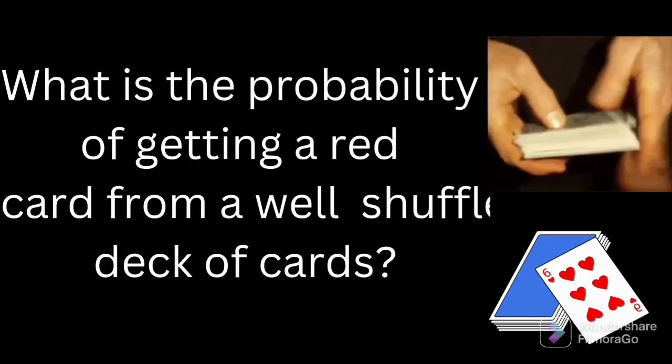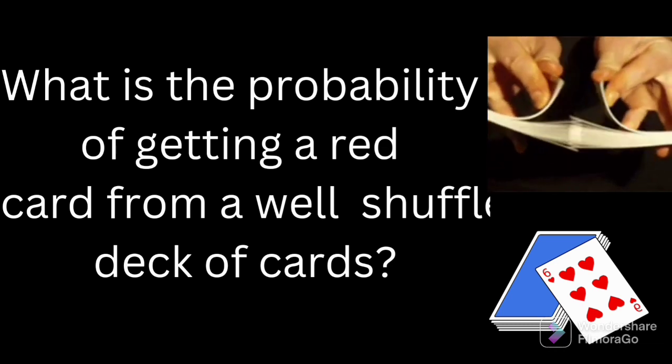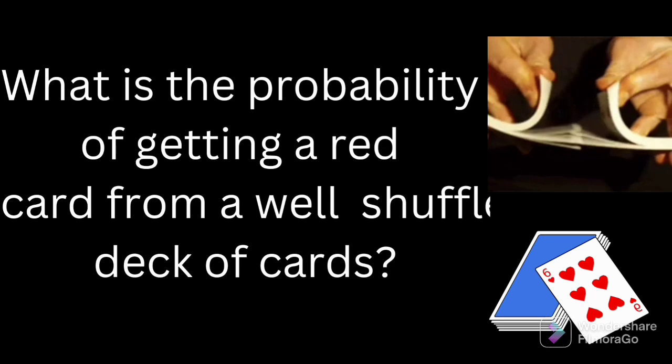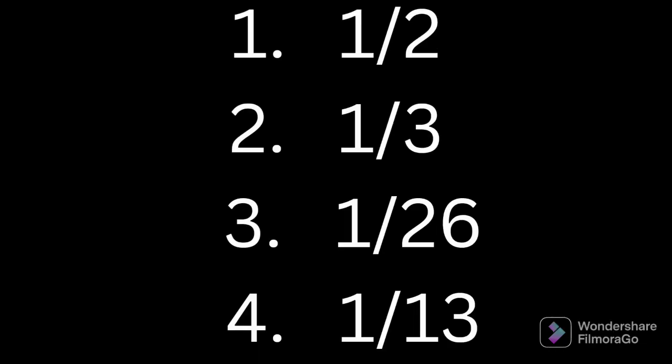What is the probability of getting a red card from a well shuffled deck of cards. The options are 1 by 2, 1 by 3, 1 by 26 or 1 by 13.